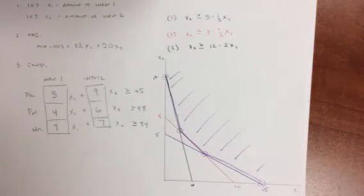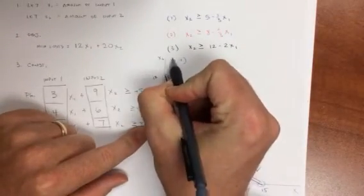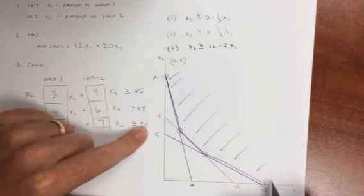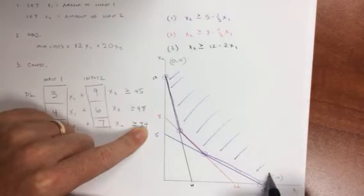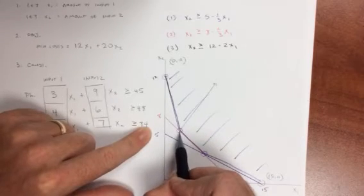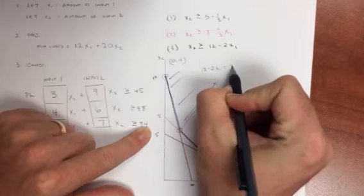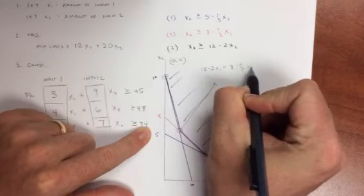Well, this solution here is simply 0, 12. This solution here is 15, 0. Well, here, this is where the black line equals the red line. So the black line is 12 minus 2x1 equals 8 minus 2 thirds x1.